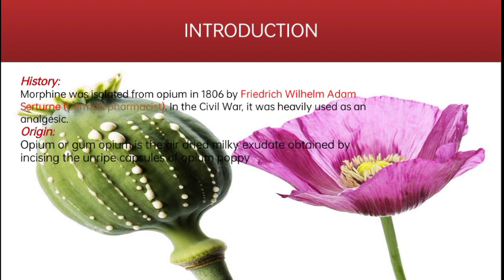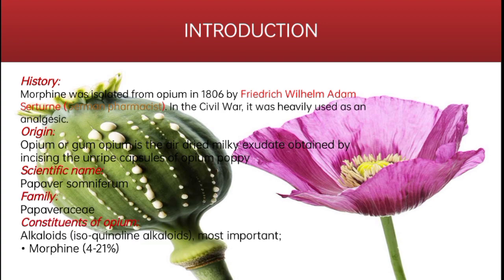Opium, or gum Opium, from which morphine is obtained, is the air-dried milky exudate obtained by incising the unripe capsule of the opium poppy, having the scientific name Papaver somniferum with the family Papaveraceae. Its constituents are alkaloids, especially isoquinoline alkaloids, in which morphine is present at about 4 to 21%.